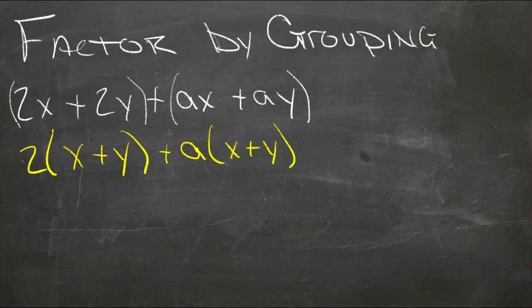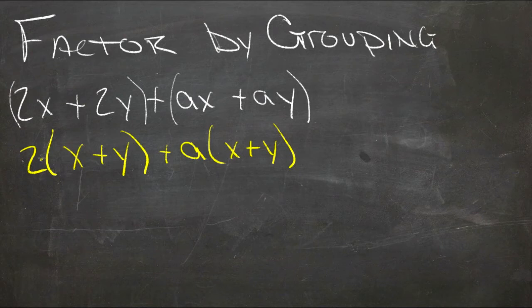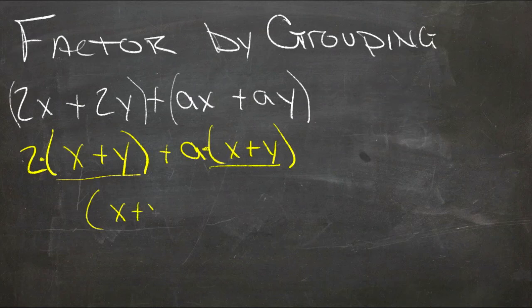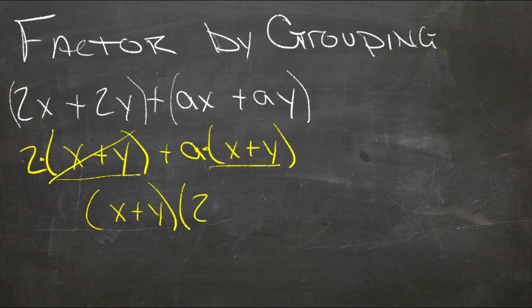So then these two things are the same. Now, we have 2 times x plus y, and a times x plus y. So now we could actually factor this polynomial by pulling out the x plus y from each term. If we do that, we get x plus y times 2, because this is gone, plus a, because this is gone.